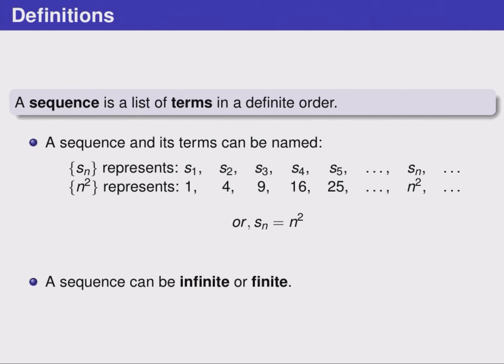A sequence can be infinite or finite. A finite sequence is just one that ends eventually, while an infinite one continues forever. The sequence above here for n squared is an infinite one, and most of the sequences we're interested in will be infinite.